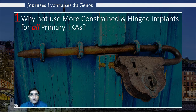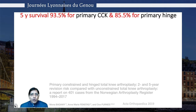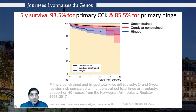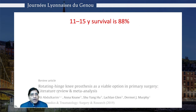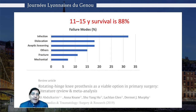Why not use more constraint for all cases? The Norwegian arthroplasty register over the last 20 years has shown a very poor survivorship for more constrained implants as compared to unconstrained implants, as you can see from this survivorship data. Also, in a recent meta-analysis, rotating hinge prostheses have a poor 11 to 15 year survivorship with a very high incidence of complications like infection, dislocation, aseptic loosening, and patellar problems.